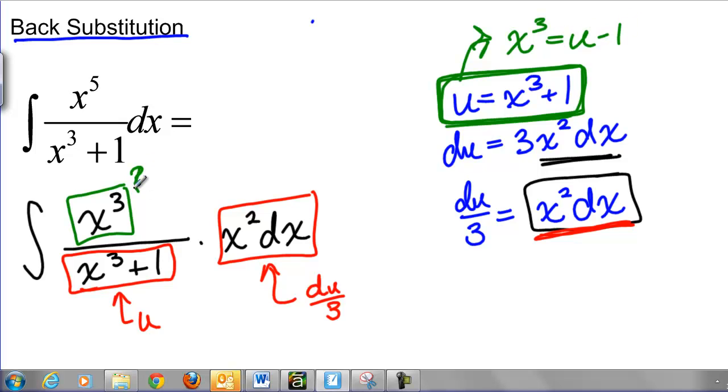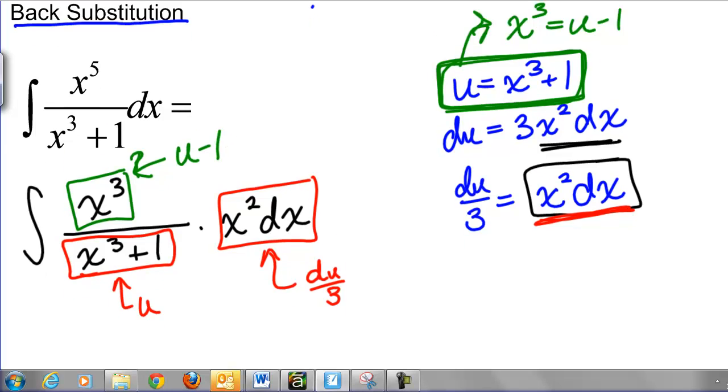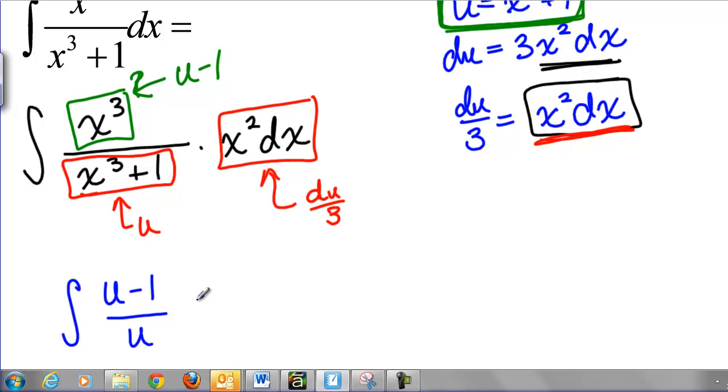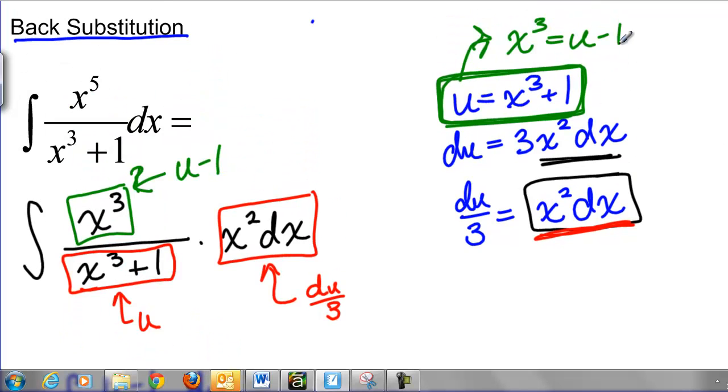So I can replace this x cubed with a u minus 1. And my new integral then is the integral of u minus 1 divided by u times du over 3. This technique right here of solving for some kind of x and putting it back into the problem, this is what we call back substitution.